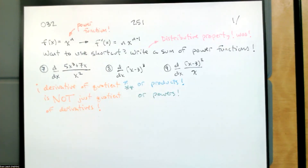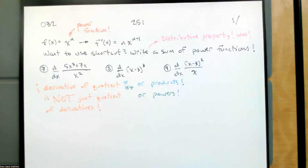If you recall, last time we started learning about some shortcuts to finding the derivative of a function. In particular, the derivative of x to the n is nx to the n minus 1. We have a shortcut for finding the derivative of a power function.